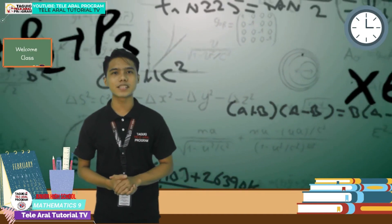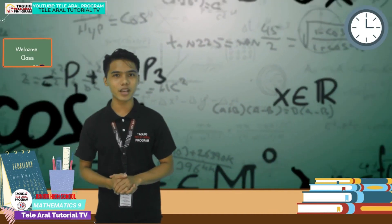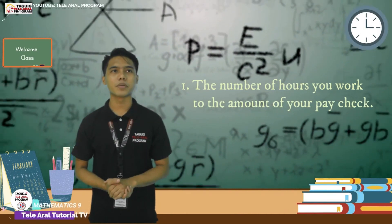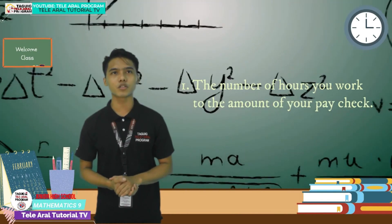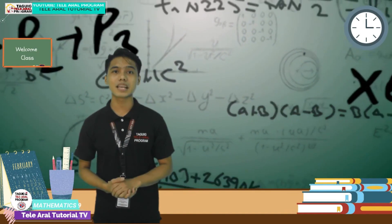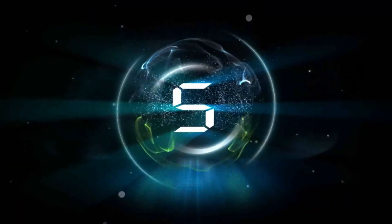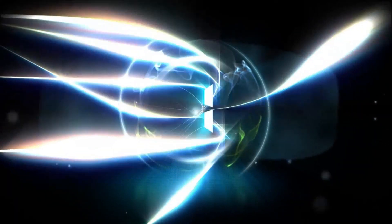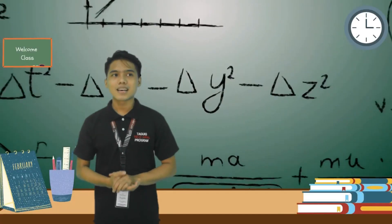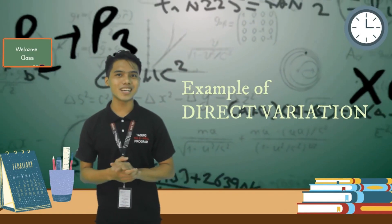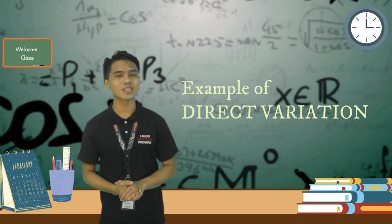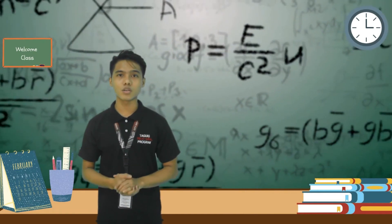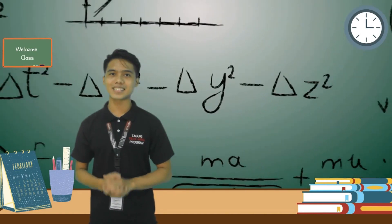Let us determine whether the given statement is an example of direct variation or not. First: the number of hours you work versus the amount of your paycheck. This is an example of direct variation, because as the hours worked increases, so does your paycheck, and vice versa.